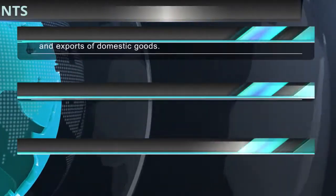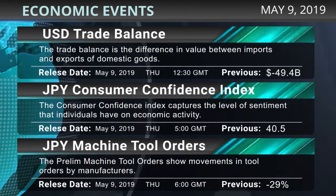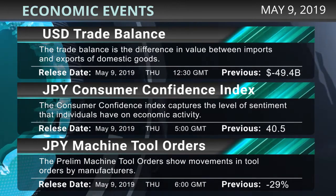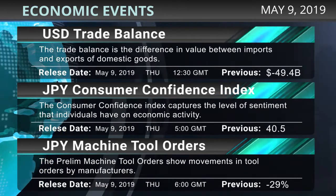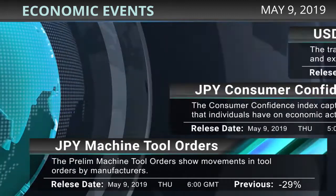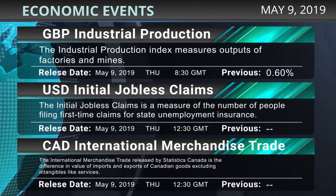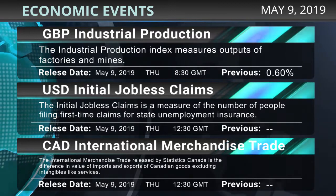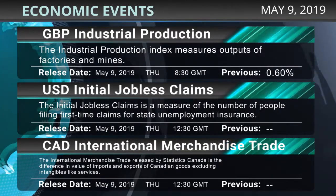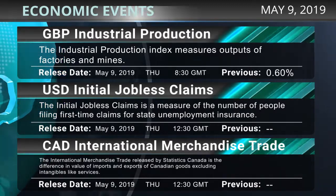The U.S. trade balance will be released at 1230 GMT. The Japanese Consumer Confidence Index at 500 GMT. The Japanese Machine Tool Orders at 600 GMT. The U.K. Industrial Production at 830 GMT. The U.S. Initial Jobless Claims at 1230 GMT. And the Canadian International Merchandise Trade at 1230 GMT.